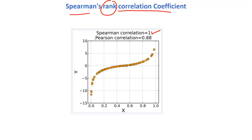You can see here: if we use the Pearson correlation coefficient, the value is 0.88, but for the same dataset using the Spearman rank correlation, we get a value of 1. Let's understand the formula used for Spearman and also compare it with the Pearson correlation.